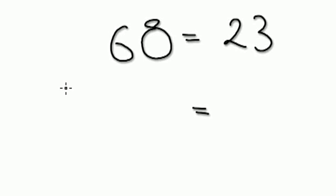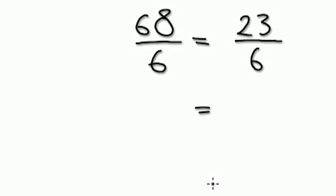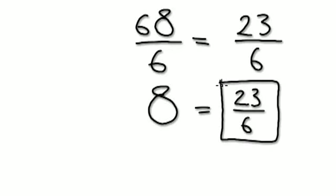Now we have 6 bags equals 23 sweets. If 6 bags divided by 6, you're going to get 1 bag. So basically 6 bags divided by 6. This side will be divide by 6. So this would be 1 bag equals 23 over 6. We can leave this as a fraction because 23 over 6 is a number.